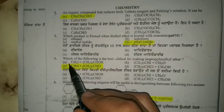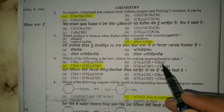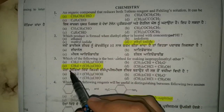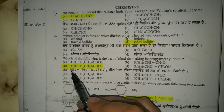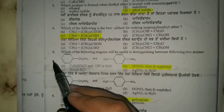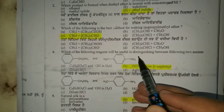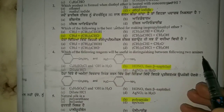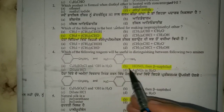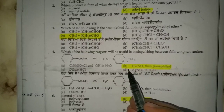Number third: which of the following is the best method for making isopropyl methyl ether? Moving to question four: which of the following reagents will be useful in distinguishing between the following two amines? Option number B is the correct option.